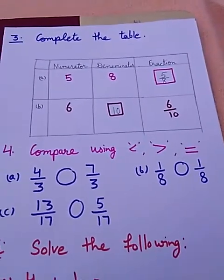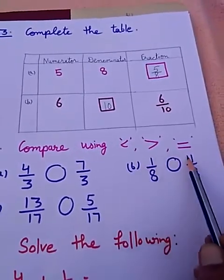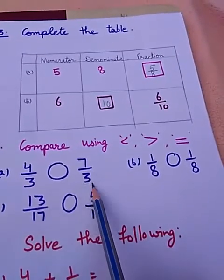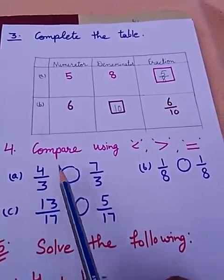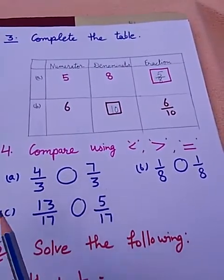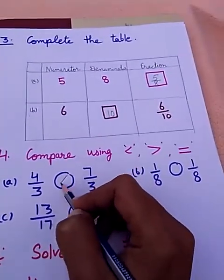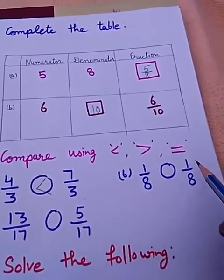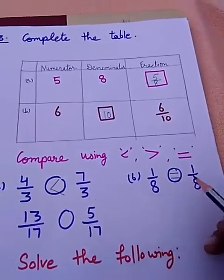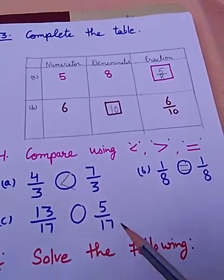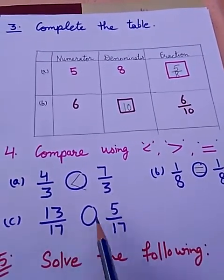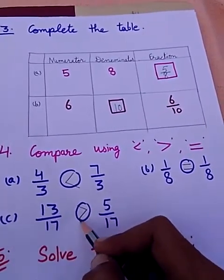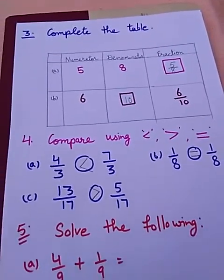Now fourth question, compare using the given symbols. Part A: 4/3 and 7/3. Here denominators are same, so we will compare the numerators. As we know that 7 is greater than 4, so 7/3 is greater than 4/3. Now Part B: 1/8 and 1/8, both are equal. Now 13/17 and 5/17, denominators are same here, compare the numerators. 13 is greater than 5, it means 13/17 is greater than 5/17.